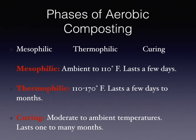The phases of aerobic composting are mesophilic, thermophilic, and curing. Mesophilic is ambient room temperature to 110°F, which lasts a few days. Thermophilic is 110 to 170°F, which lasts a few days to months. Curing is moderate to ambient temperatures and lasts one to many months. Time frames may vary, but temperatures must be achieved to complete composting.